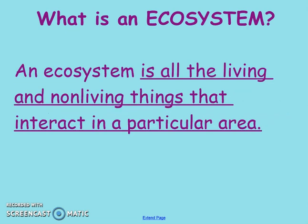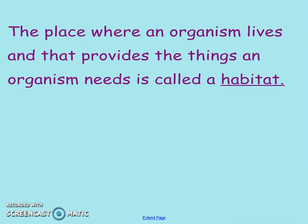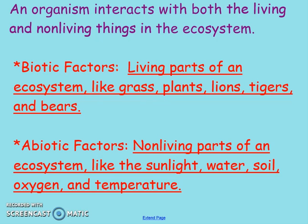So if we look at an ecosystem, an ecosystem is going to be all the living and non-living things that interact in a specific area. An organism is going to get their food, water, shelter, and other things that they need to live, grow, reproduce, and survive in their surroundings. That place where an organism lives that provides everything it needs is called a habitat. It's kind of like when you go to the zoo — it's called the elephant habitat, and it has everything they need to eat, sleep, and survive.